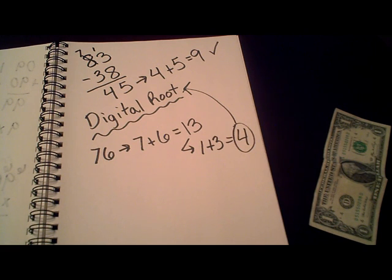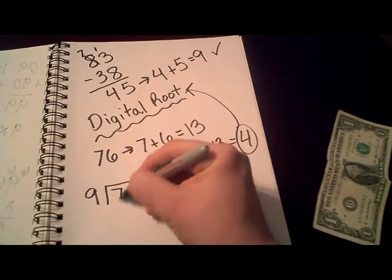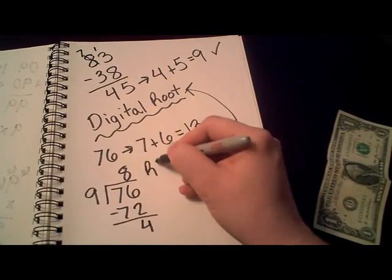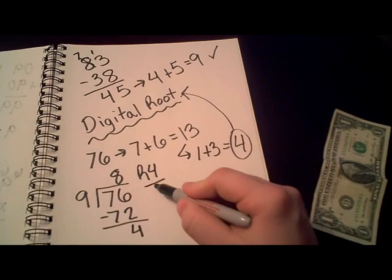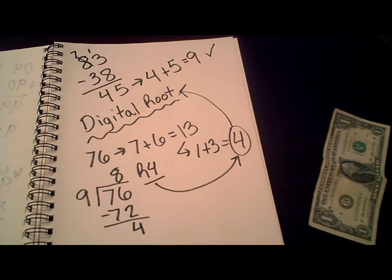Surprisingly, this digital root tells us something about 76's relationship with the number 9. You see, if we divide 76 by 9, we end up with some quotient. But more importantly, we end up with a remainder that matches the number's digital root. Since this works for all numbers, we can apply this little known fact to a pretty baffling little magic trick.